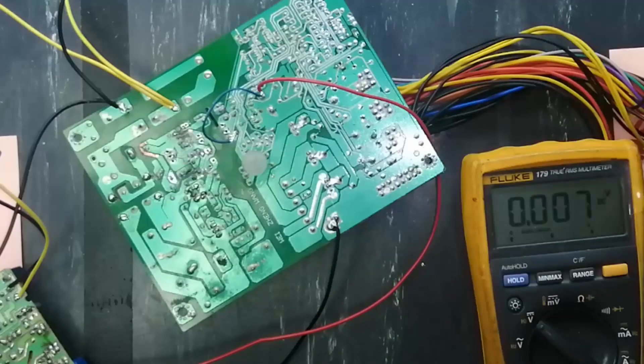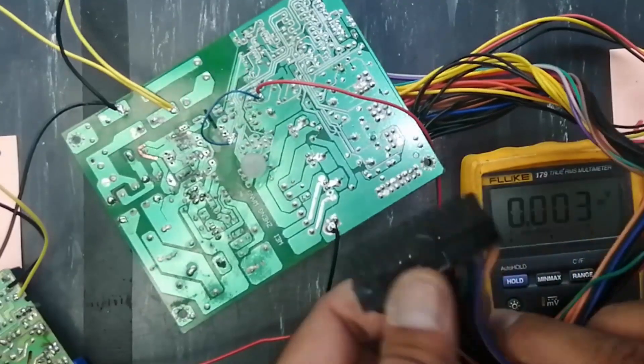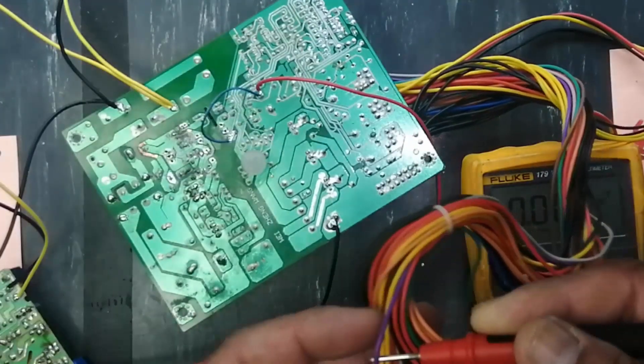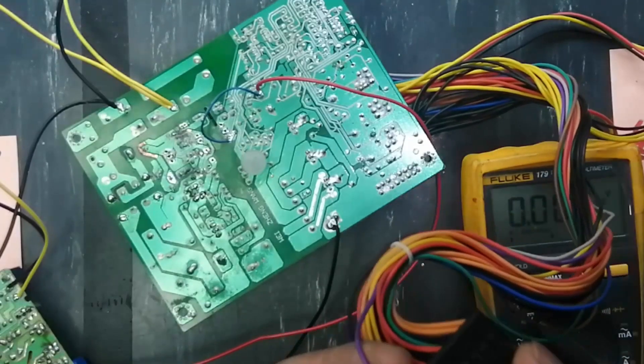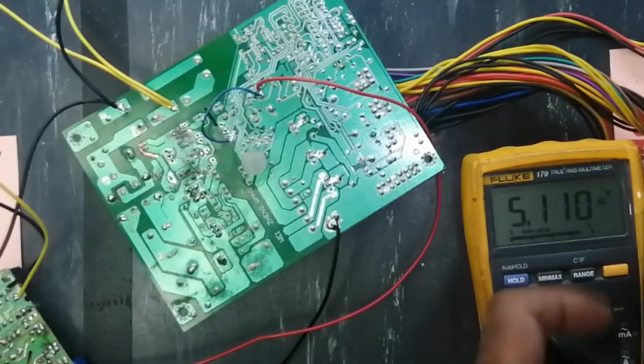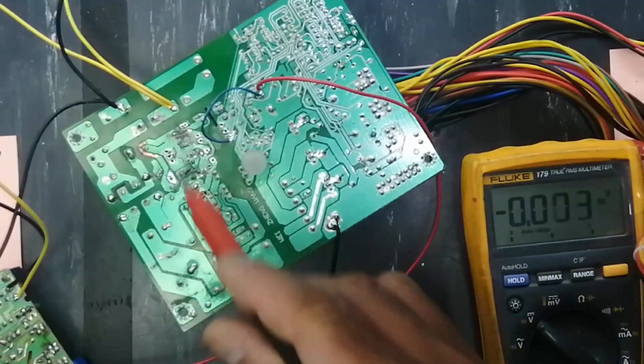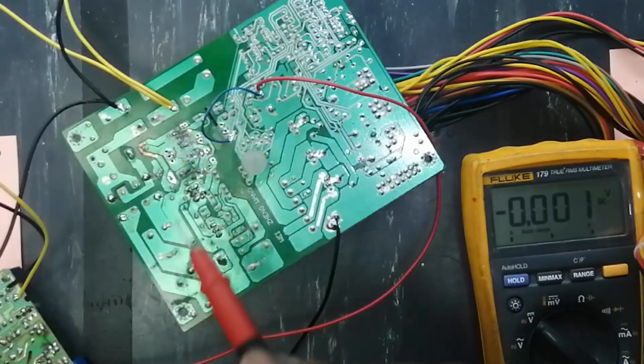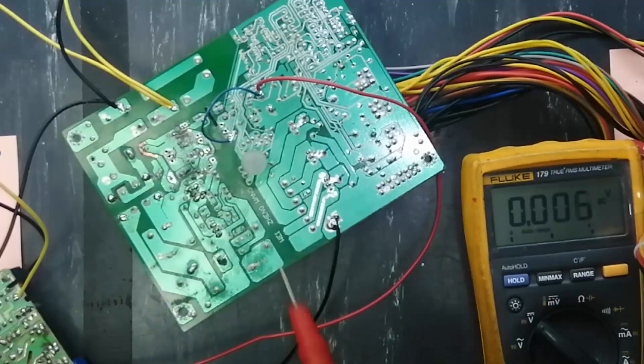Now check 5 volt at the purple wire. Check 5 volt at purple wire. One, two, three, four. It is 5 volt. So our standby voltage, this area is dead. We removed the bad components, and now we can turn on the power supply.